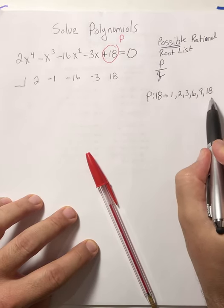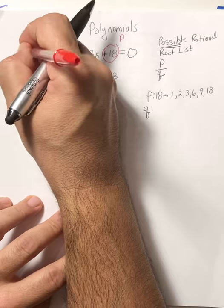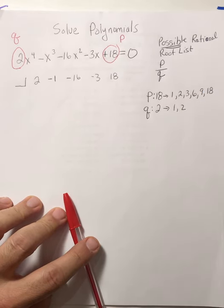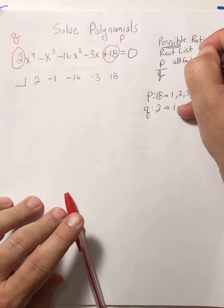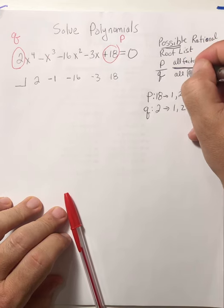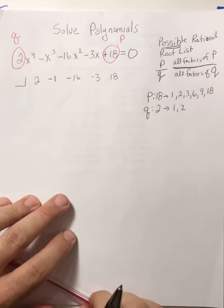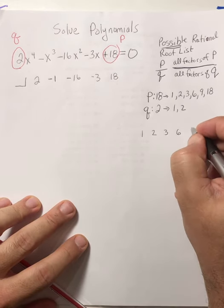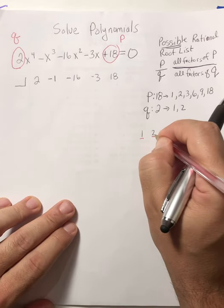So these are all the factors of 18. Then Q — where is Q? Q is the lead coefficient, so 2. I need all the factors of 2: 1 and 2. So P over Q literally means all factors of P over all factors of Q. I'm going to write this out: 1, 2, 3, 6, 9, 18 — all over 1. This will be the first and last time you see me put them over 1.